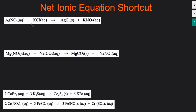The next step is to cross out any atoms, ions, or elements that have the same states on both sides. For example, we have one K that's aqueous on the left side and we also have a K that's aqueous on the right side. Since they're both K and both aqueous, we can cross them out. Another ion that we can cross out is the NO3 — the nitrate ion is aqueous on the left and aqueous on the right, so we'll also cross out the nitrate.